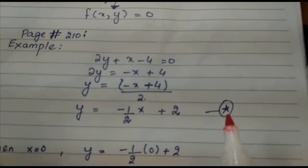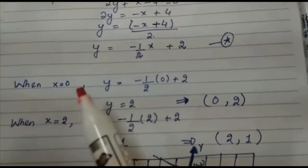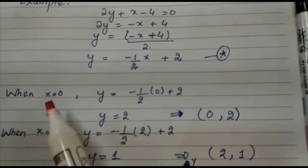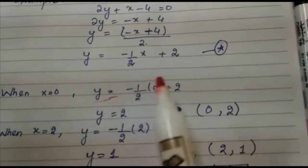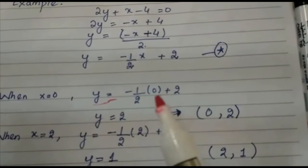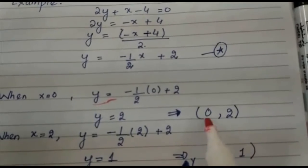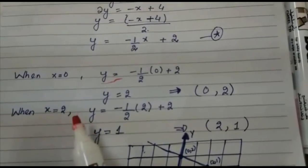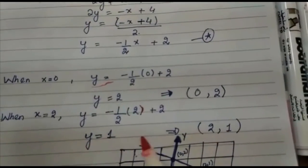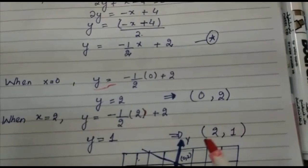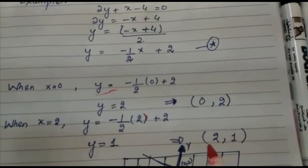Now take two values. When x = 0, substitute: y = (-1/2)(0) + 2, so y = 2. The ordered pair is (0, 2). Then take x = 2: y = (-1/2)(2) + 2 = -1 + 2 = 1. So the ordered pair is (2, 1).